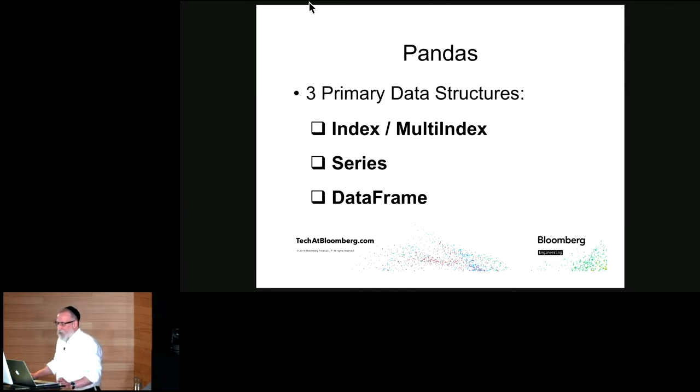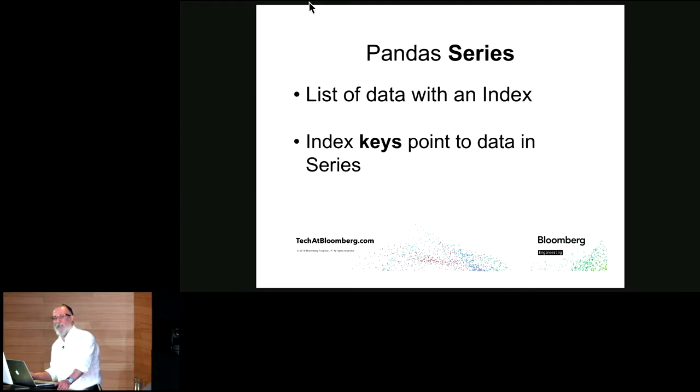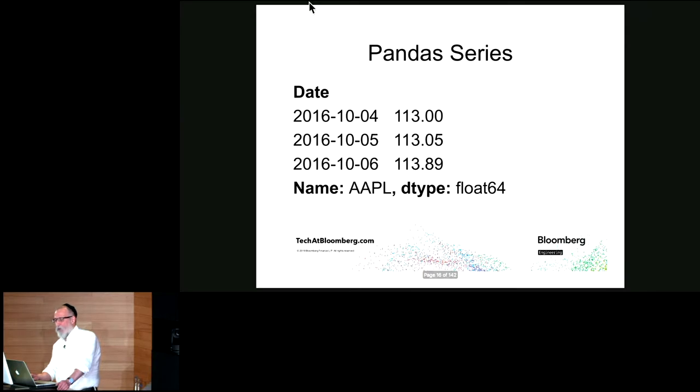So let's talk about Pandas. If you understand these three primary data structures in Pandas, you understand the core of Pandas. They are the index or multi-index, series, and a data frame. A Pandas index is just a list of keys. It's essentially a hash table. You can think of it as a Python dictionary. A series is a list of data that has an index, so you can access that data by key. Here are the parts of a series. You have your values. You have your index. In this case, the index are date objects. You have a name for your index, a name for your series, and a series data type.